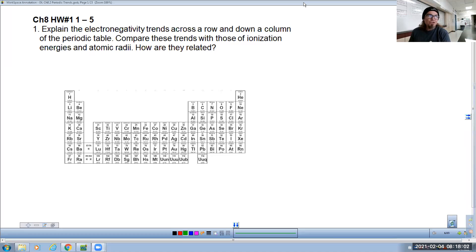Explain the electronegativity trends across a row and down a column of the periodic table. Compare these trends with those of ionization energies and atomic radii. How are they all related?